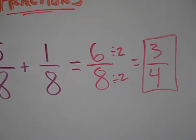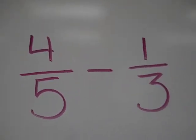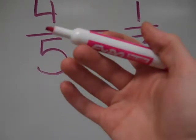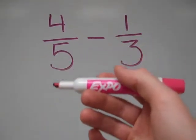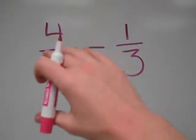Now of course in my next example, the denominators aren't the same. So here I have 4 fifths minus 1 third. So again, my denominators aren't the same. So I have to make equivalent fractions that have the same denominators. Some people do this vertically, I like to do it horizontally.